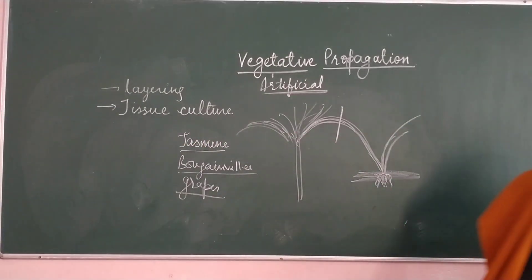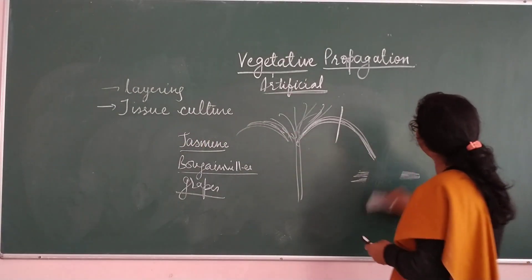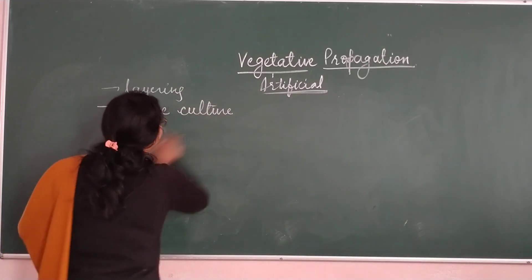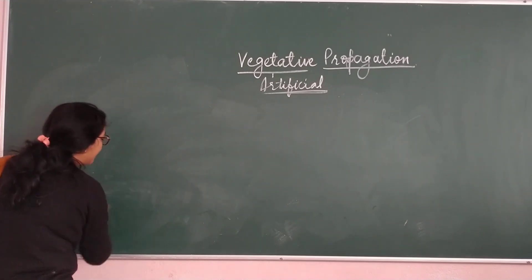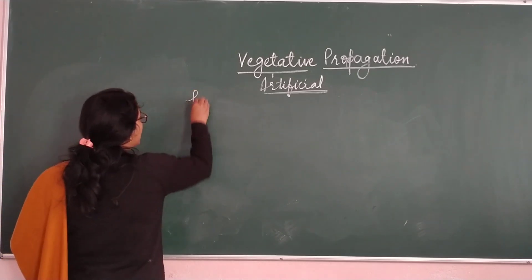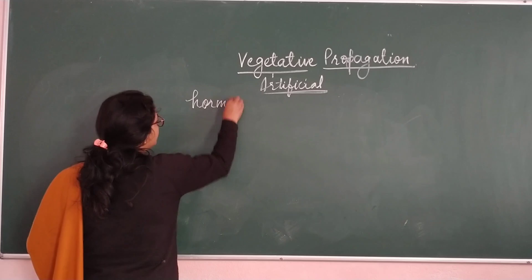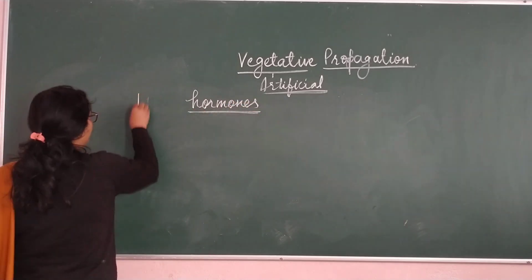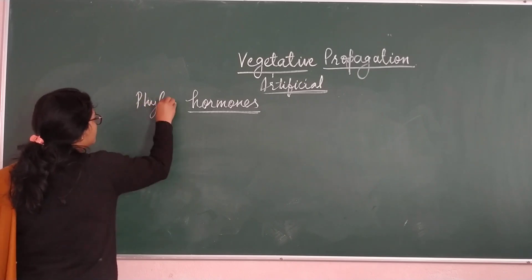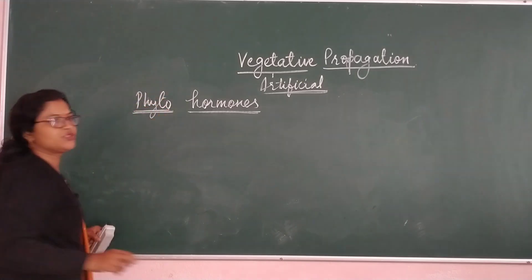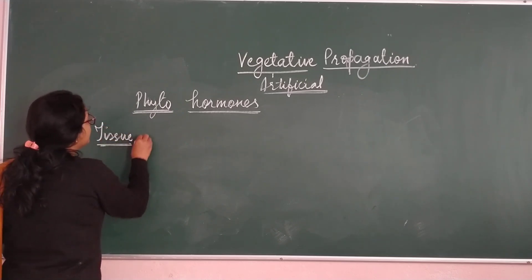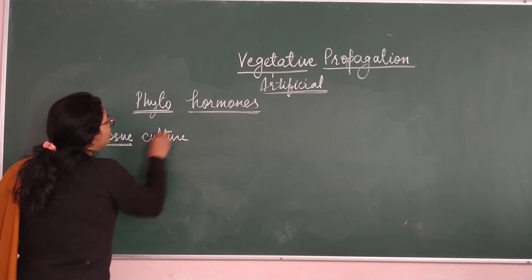Now let us start tissue culture. What do we mean by tissue culture? You must know that plants do not have a nervous system — they have hormones, and these hormones are responsible for their growth and development. The plant hormones are called phytohormones.